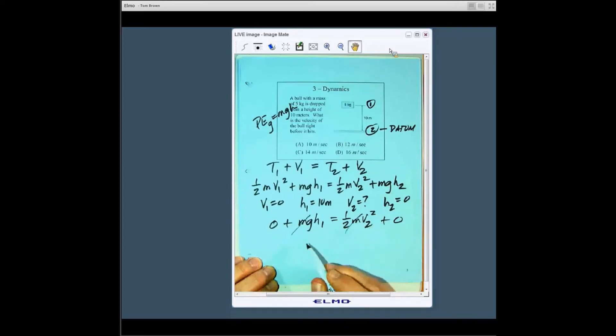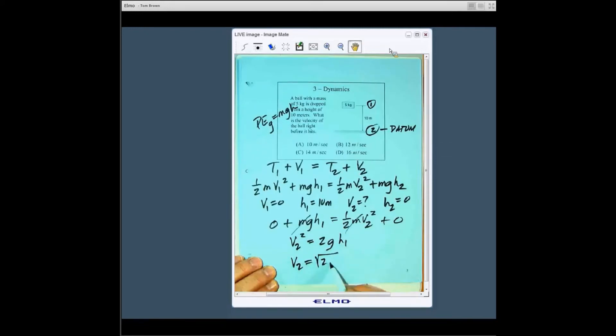So we can rearrange this, multiply both sides by two and get the velocity on the left hand side. So we get v2 squared equals 2gh1 or v2 is equal to the square root of 2gh1.